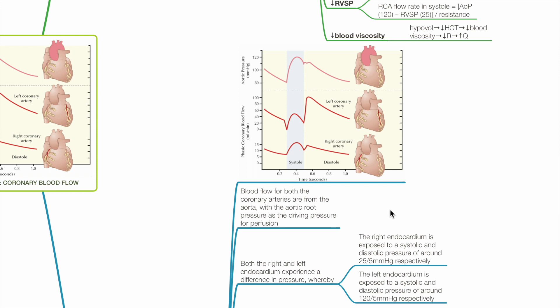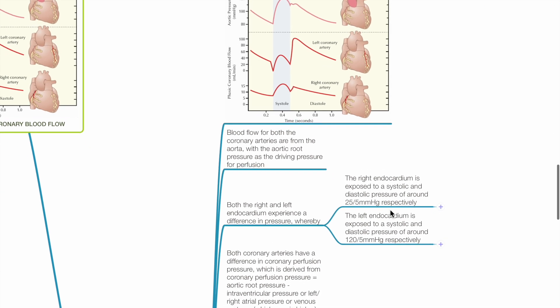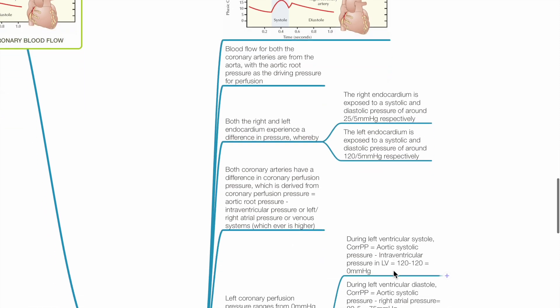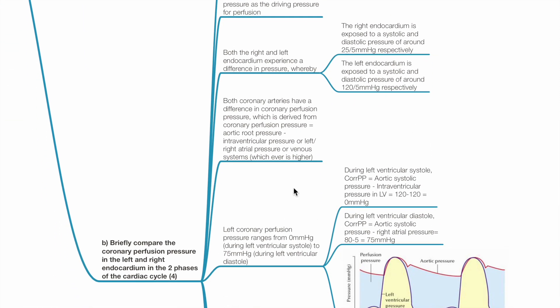Part B: Briefly compare the coronary perfusion pressure in the left and right endocardium in the two phases of the cardiac cycle. Blood flow for both coronary arteries is from the aorta, with aortic root pressure as the driving pressure for perfusion. Both the right and left endocardium experience a difference in pressure, and coronary perfusion pressure equals aortic root pressure minus intraventricular pressure, or left or right atrial pressure, or venous system pressure, whichever is higher.